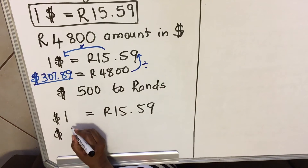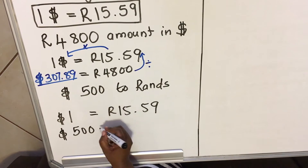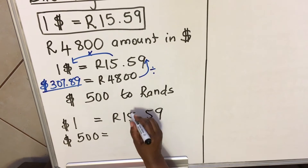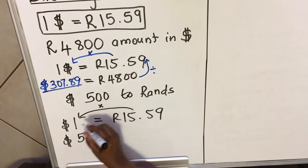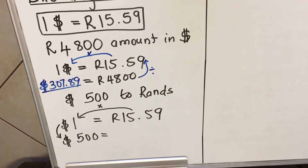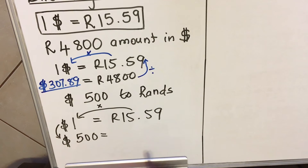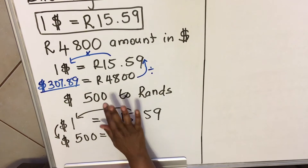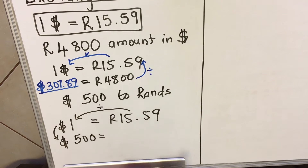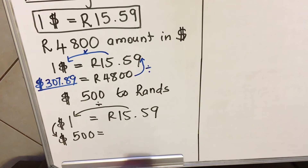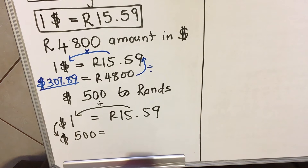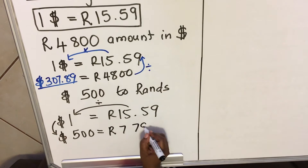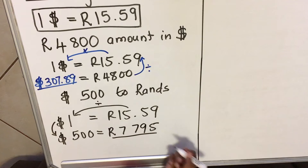So you write: 500 dollars equals... then apply the anti-clockwise rule. Start from the left: I have 15.59, I divide first, then I multiply — divide by 1. So the answer is 7795 rand.